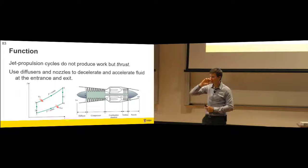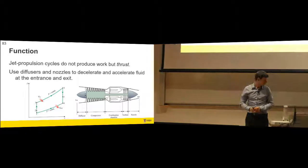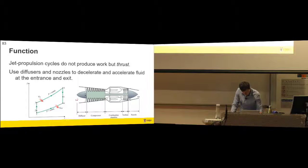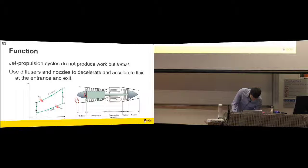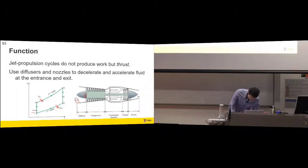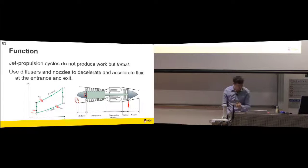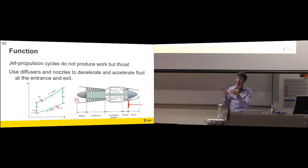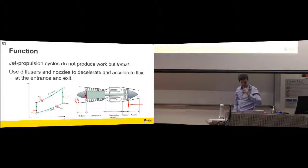We can get a slight pressure advantage by using the velocity of air coming in. At state point one, we slow that air down to state point two, and that does some of the compression work for us - the pressure and temperature increase from the diffuser. Then at the back end of the turbine, we don't extract all the energy, leaving hot high-pressure gas. Forcing that through a nozzle makes it go very fast - a nozzle turns enthalpy into kinetic energy. The faster we push it out the back, the more thrust we get.